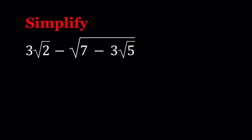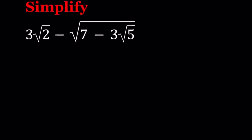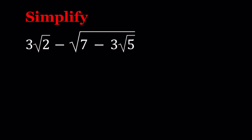Hello everyone. In this video, we're going to be simplifying a radical expression in two ways. We have 3 times the square root of 2 minus square root of 7 minus 3 root 5, and we're going to simplify this expression. Let's start with the first method.